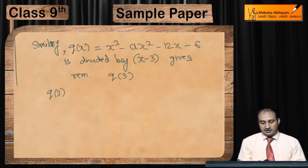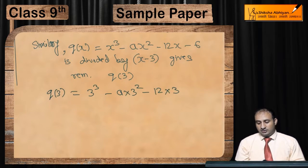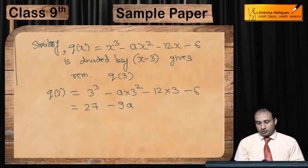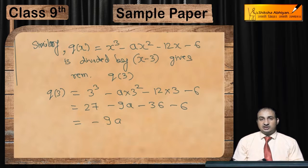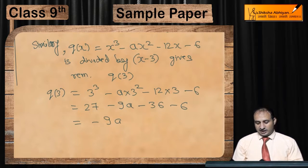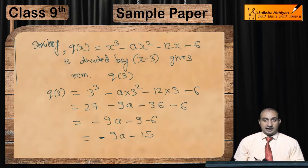q(3) = 3³ - a(3²) - 12(3) - 6 = 27 - 9a - 36 - 6. So 27 - 36 - 6 = -15, giving q(3) = -9a - 15.